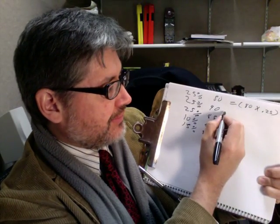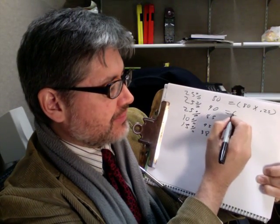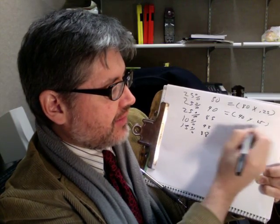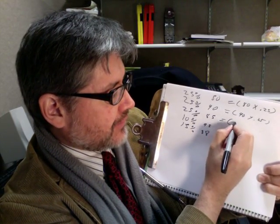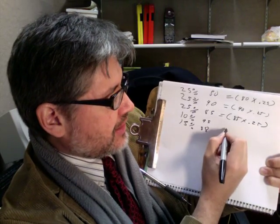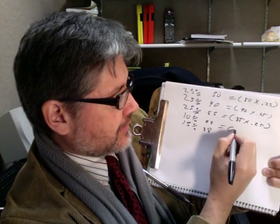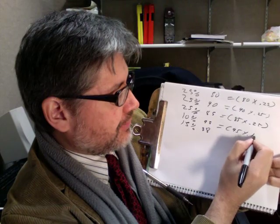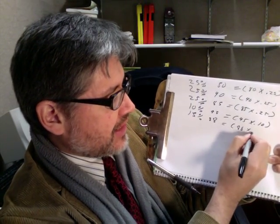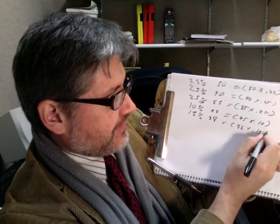And obviously the next ones would be the same type of thing. It would be 90 times 0.25 and then 85 times 0.25. And then 95 times 0.10 and then finally this one here is 88 times 0.15.